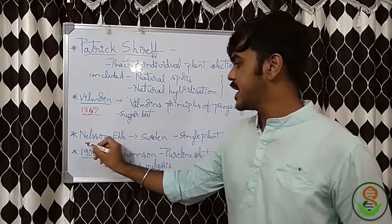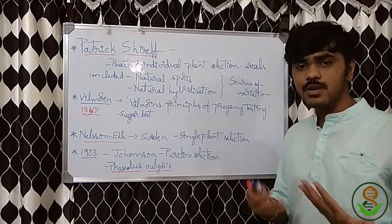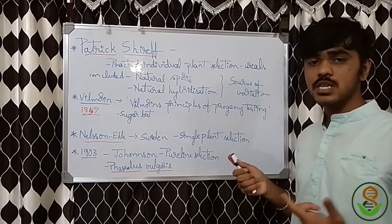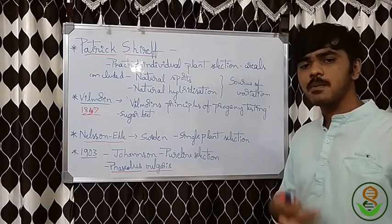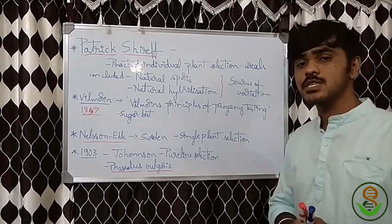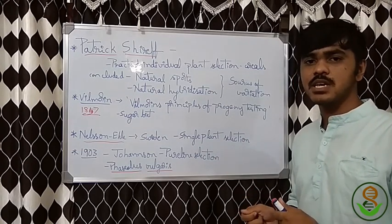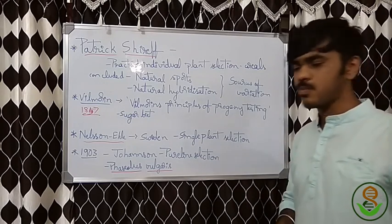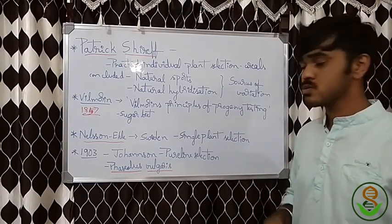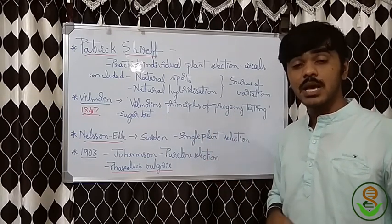Next important person is Nilsson-Ehle in Sweden, a co-worker who refined the concept of single plant selection. The very important work was done in 1903 by Johannsen — this is frequently asked in semester and competitive exams. Johannsen gave pure line selection. It should be noted that Vilmorin's progeny testing principles worked on sugar beet but those principles don't work on wheat.